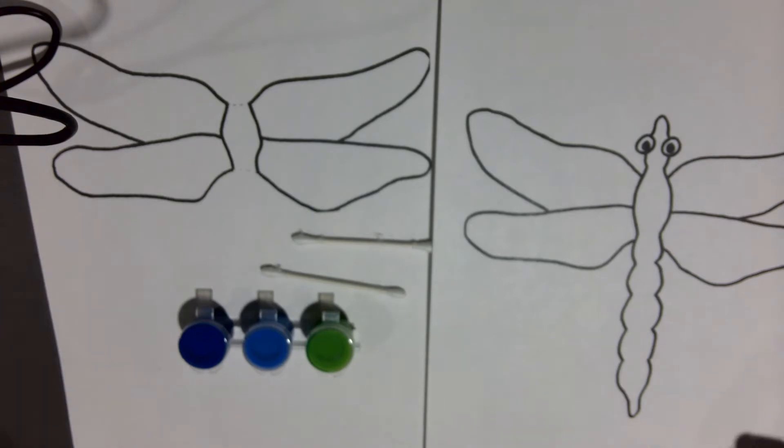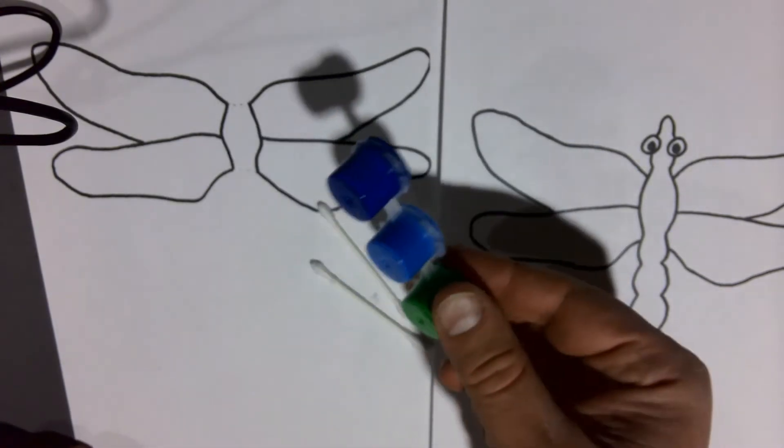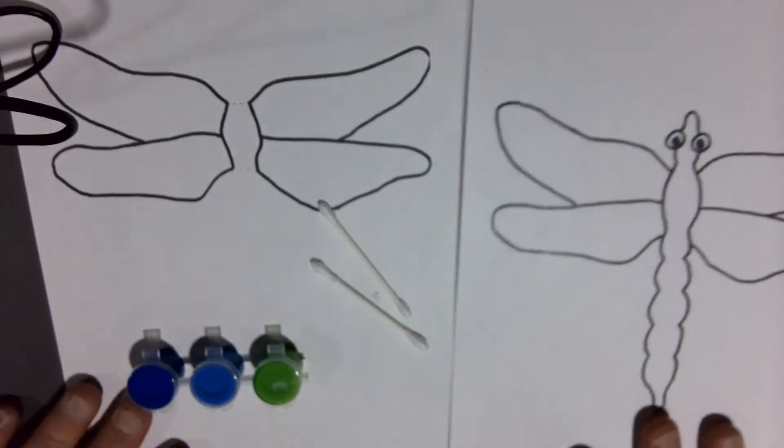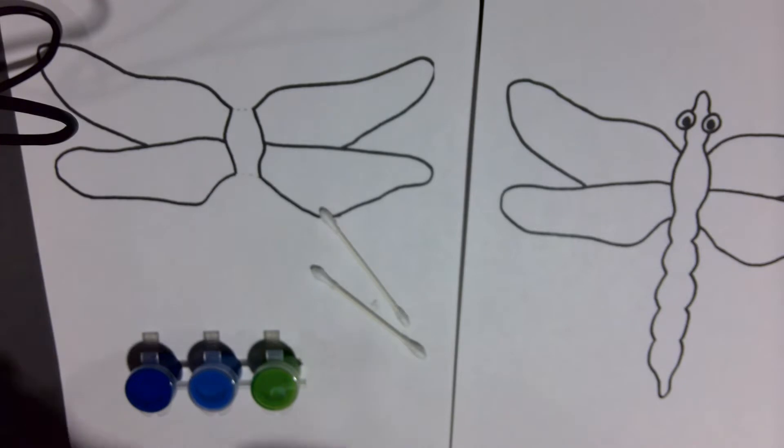If you picked up the kit from the library, you should have a few q-tips, a couple of different colors of paint pots, and two pieces of our template. You're also going to need a pair of scissors.